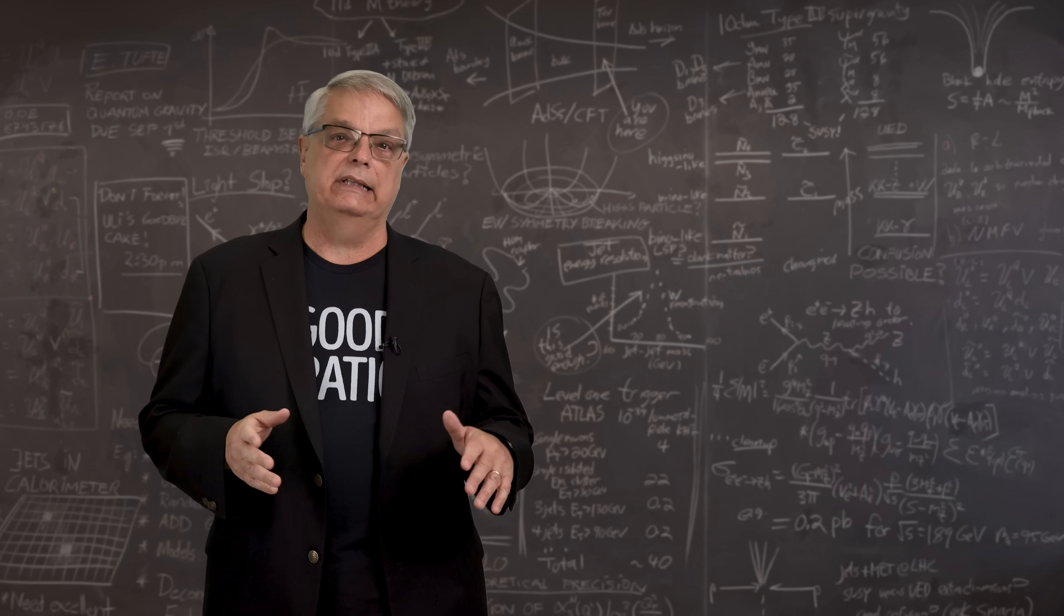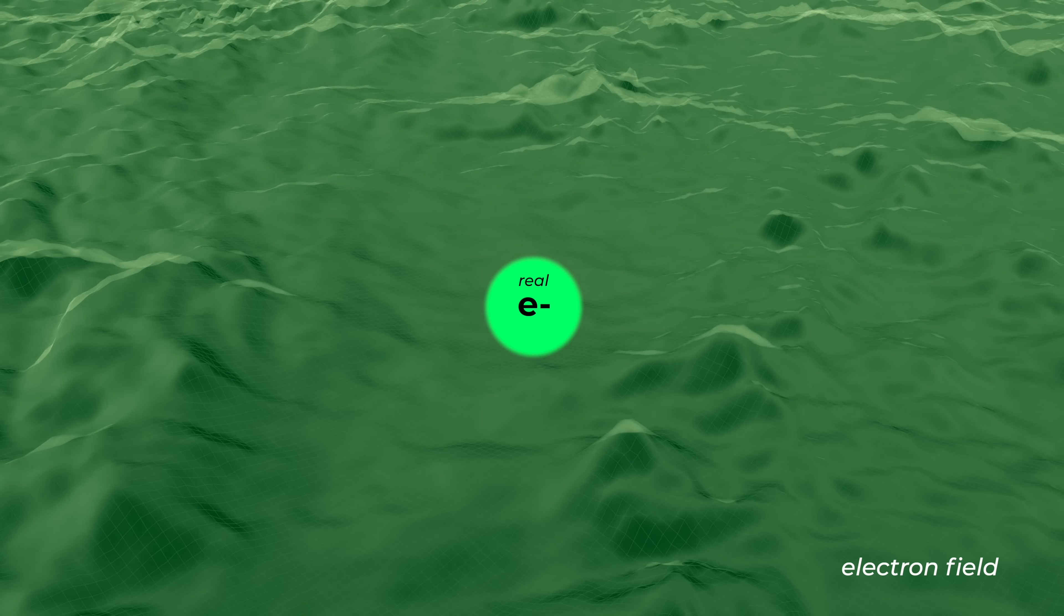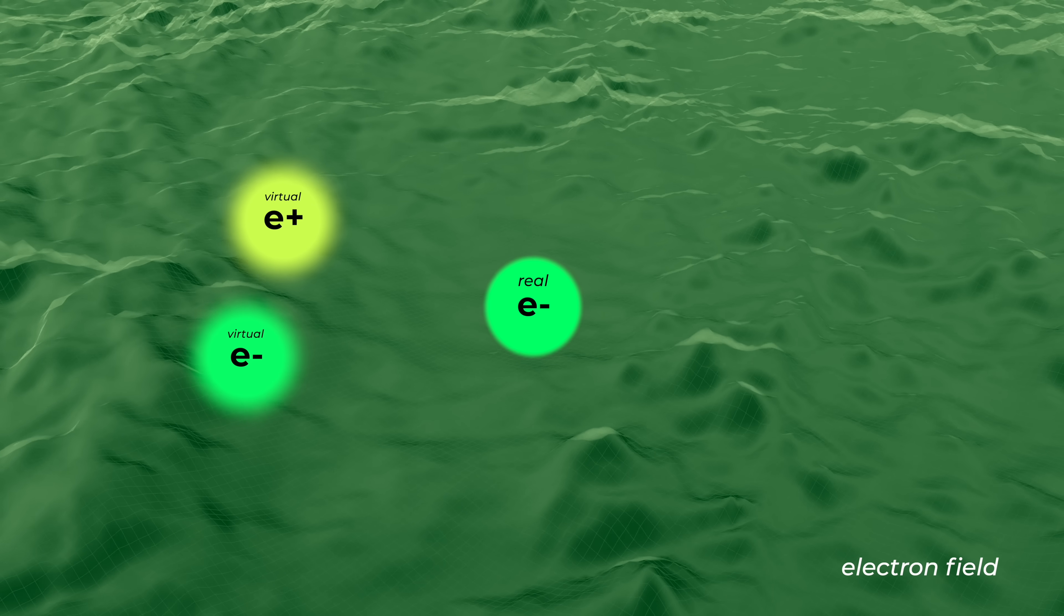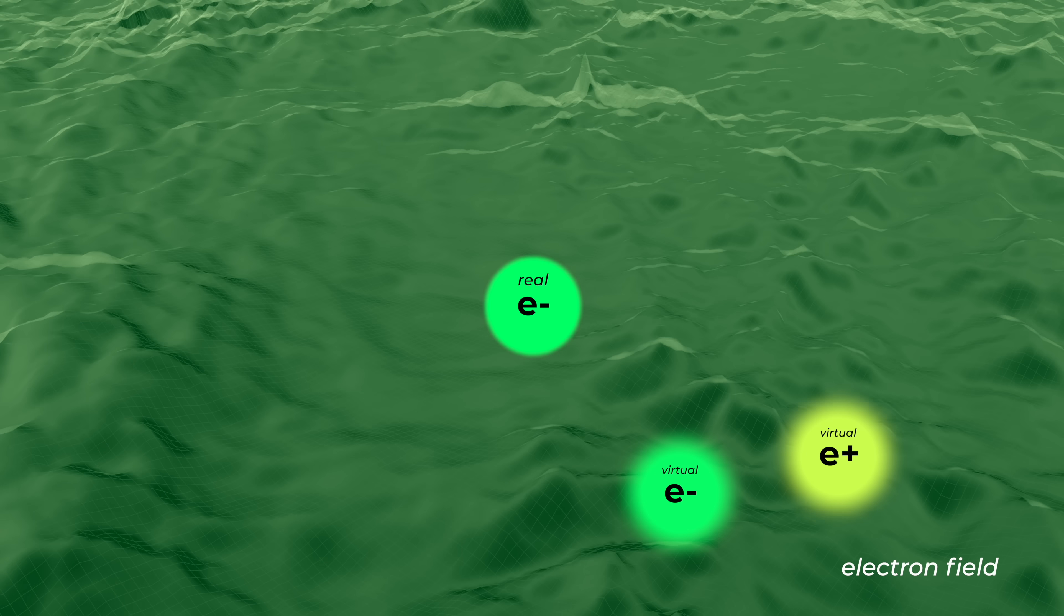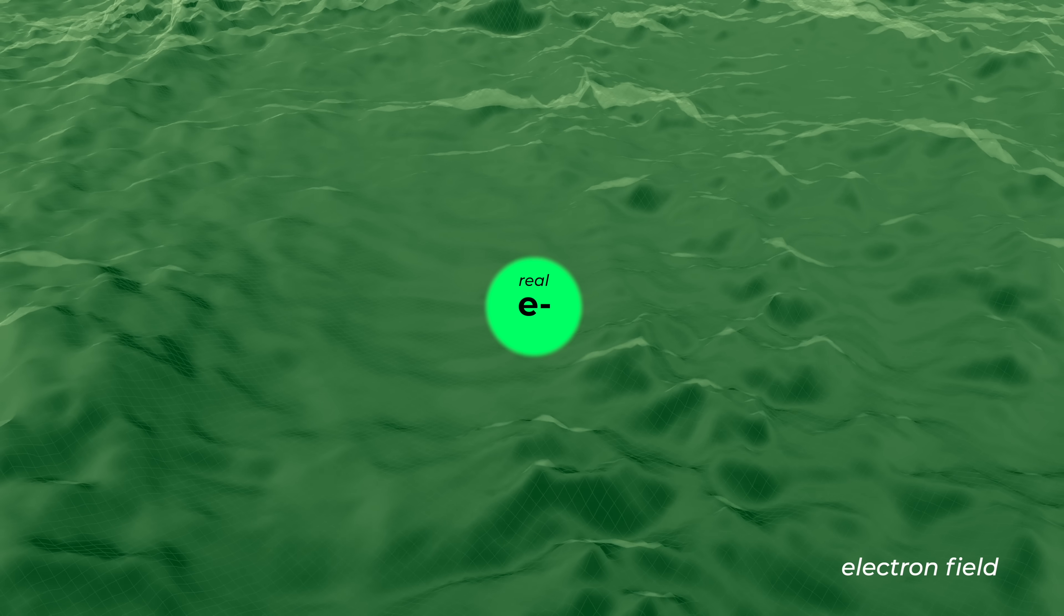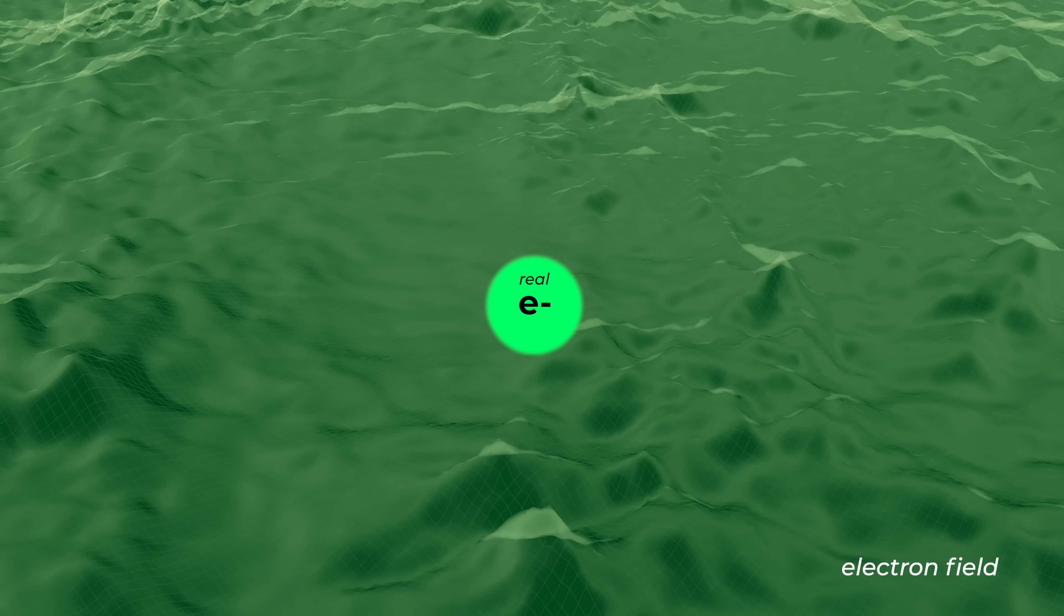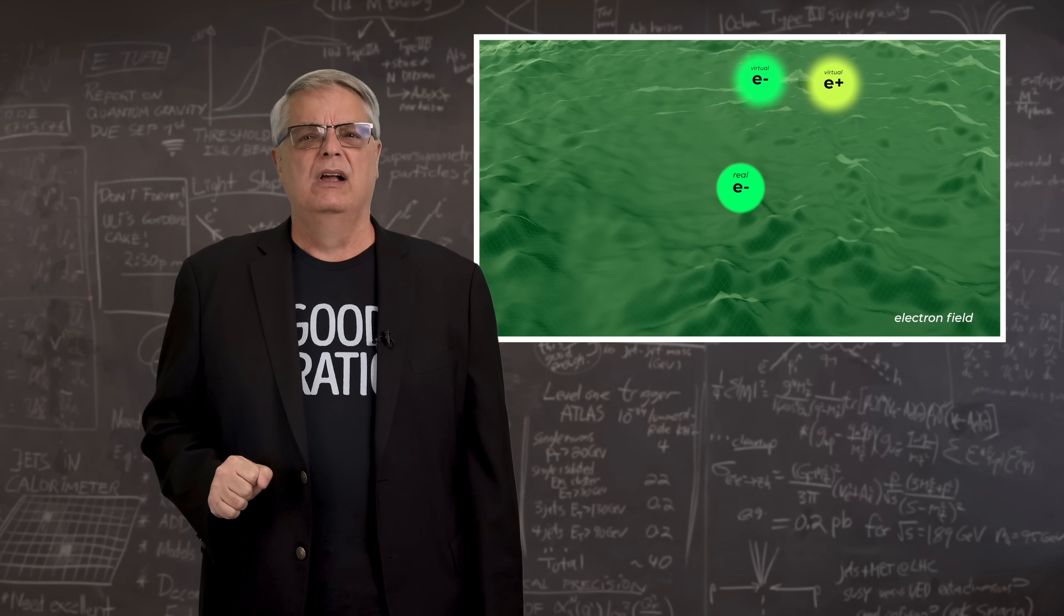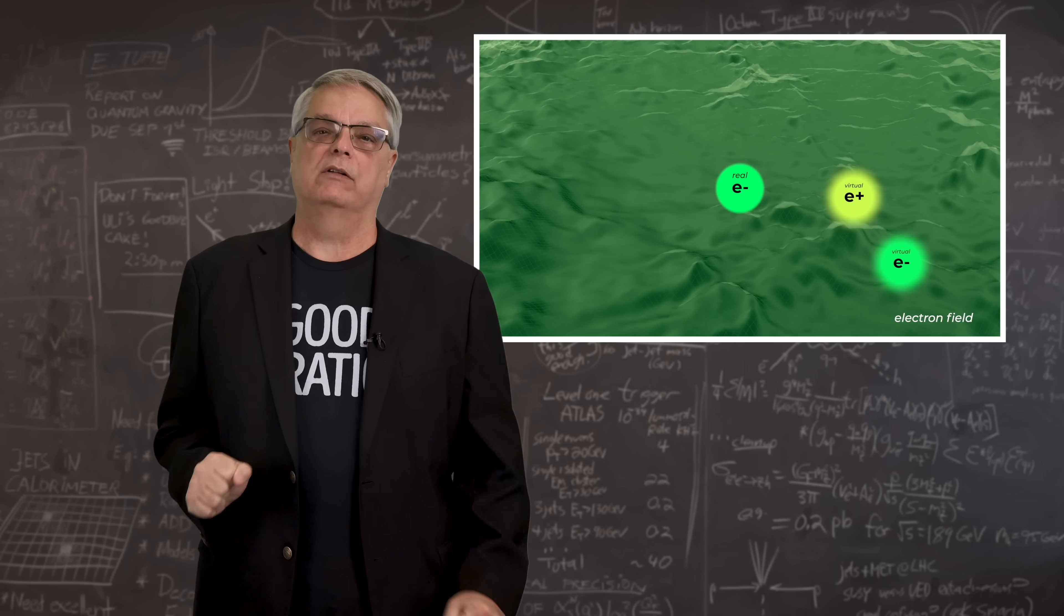Antimatter electrons are slightly different vibrations of the same field. Now we're getting to the main topic of this video, virtual particles. A quantum field can vibrate in more ways than the specific one that makes real particles. And when it vibrates in not quite the right way to make an electron, that's a virtual electron. Although there is a corresponding vibration that also makes an antimatter electron.